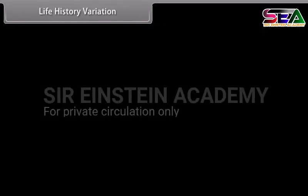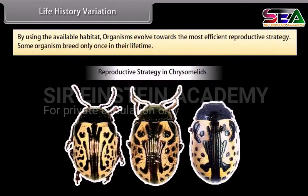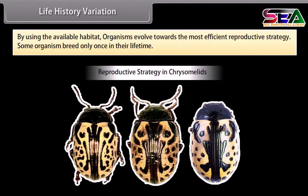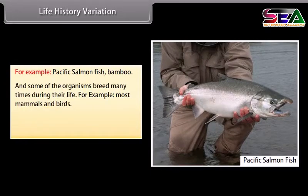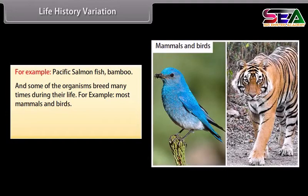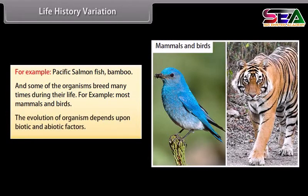Life history variation describes how organisms evolve towards the most efficient reproductive strategy using the available habitat. Some organisms breed only once in their lifetime — for example, Pacific salmon and bamboo. Some organisms breed many times during their life — for example, most mammals and birds. The evolution of the organism depends upon both biotic and abiotic factors.